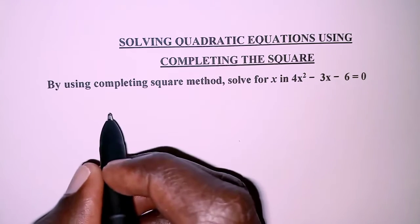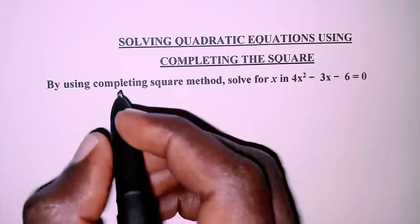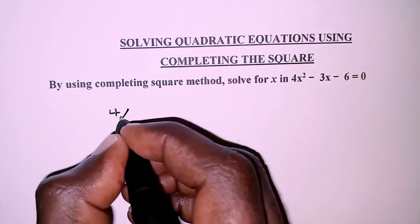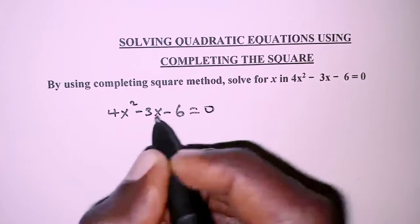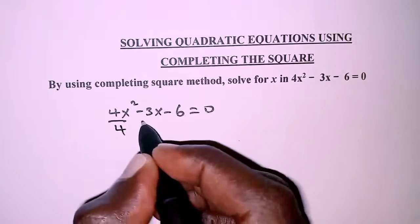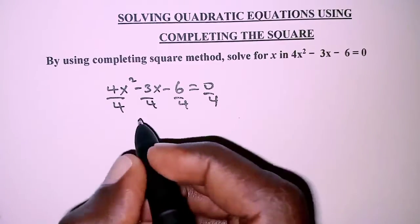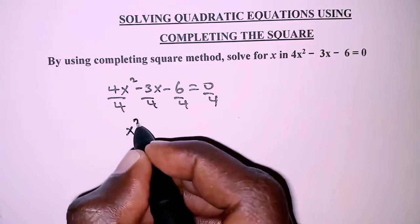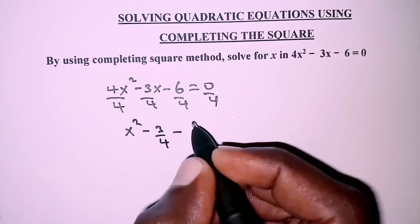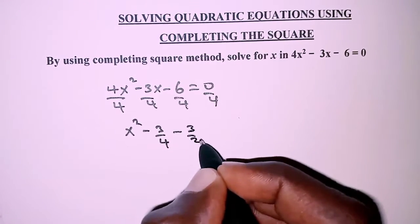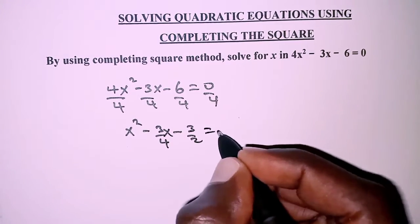The first thing before we proceed is to ensure that the coefficient of x squared is unity. So we are going to have 4x squared minus 3x minus 6 equals 0, and then divide all through by 4. When you divide all through by 4, what you get is x squared minus 3 over 4 x minus 3 over 2 equals 0.